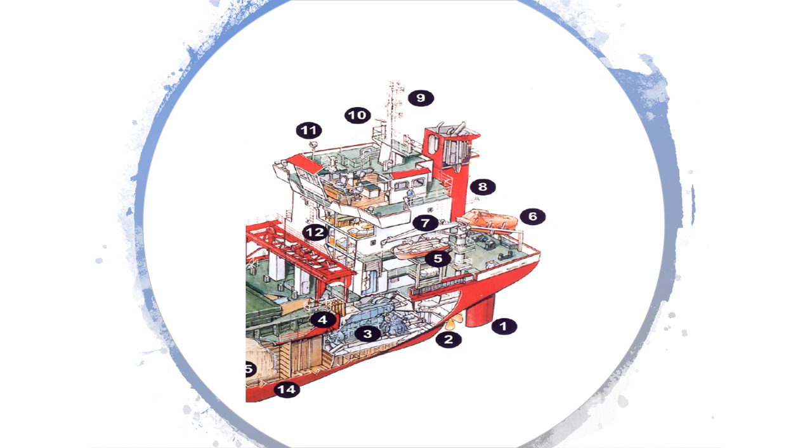Number six is a free fall lifeboat, different from the davit-launched lifeboat. Number seven is the crane provided for the rescue boat or man overboard boat, as well as for lowering the life raft and provisions. It's a multi-purpose crane. Number eight, you have the funnel with all exhaust pipes extending from the engine room.